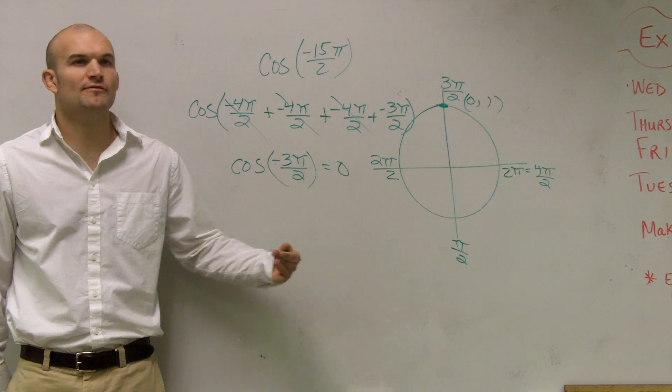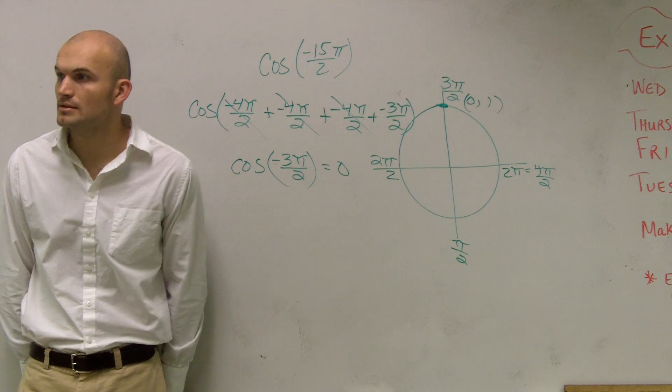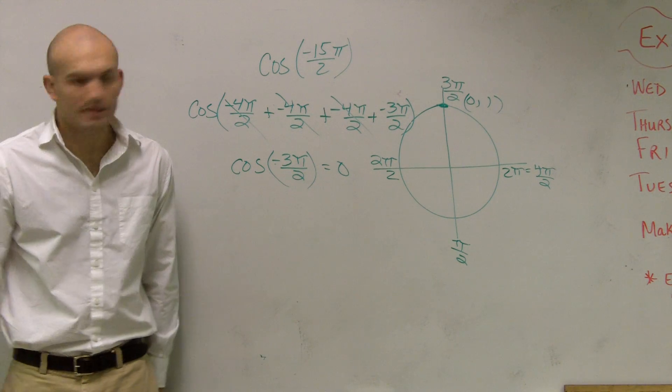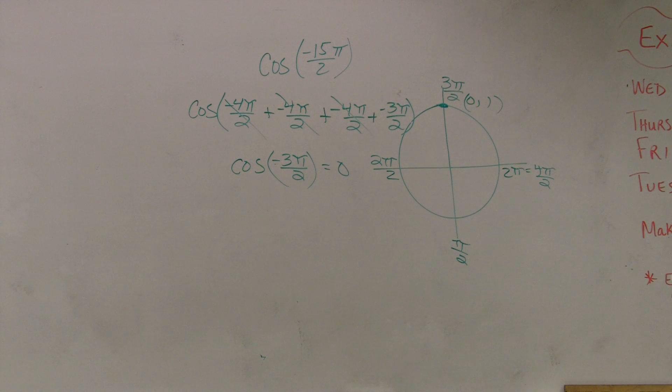So like I said, once you do enough of those, you can probably start calculating that in your head without having to draw the circle out. It's 0 because cosine is x. Exactly. So whatever our remainder is, you can think of it like your remainder off of that.